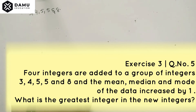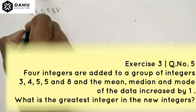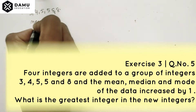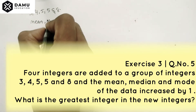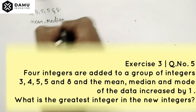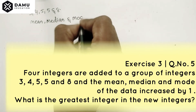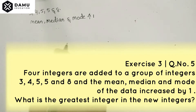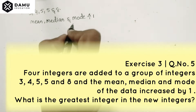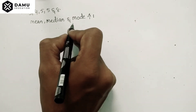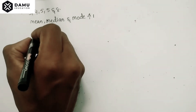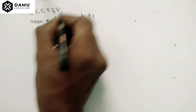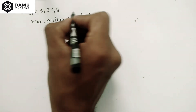After the four integers are added, the mean, median, and mode are each increased by one. So for all three measures, one is added. The question asks: what is the greatest integer in the new group of integers after four more numbers are added?